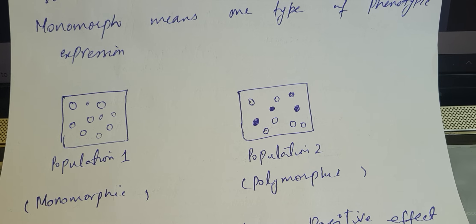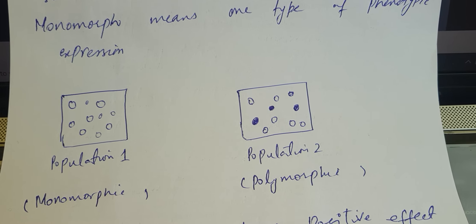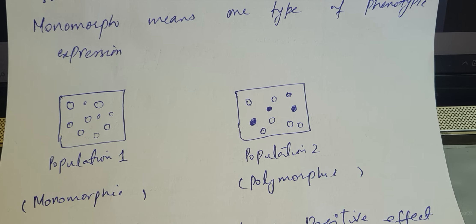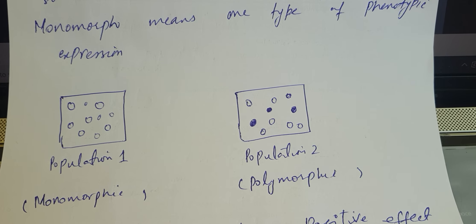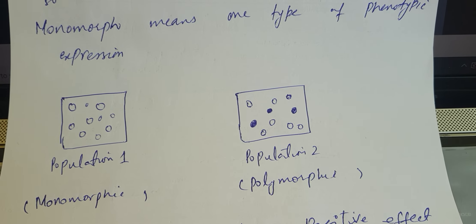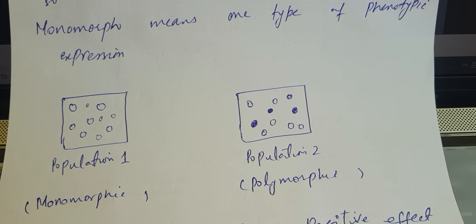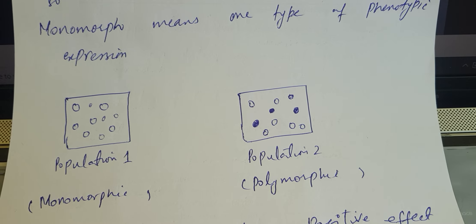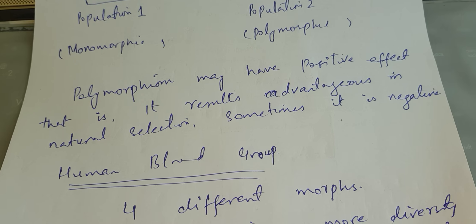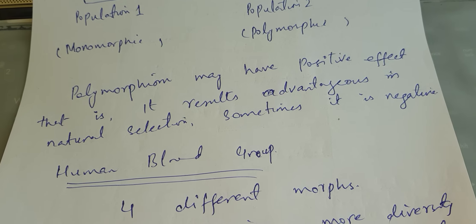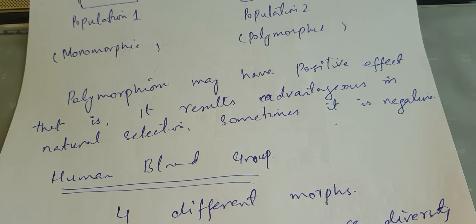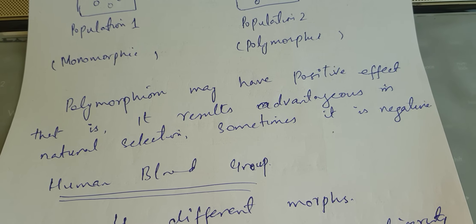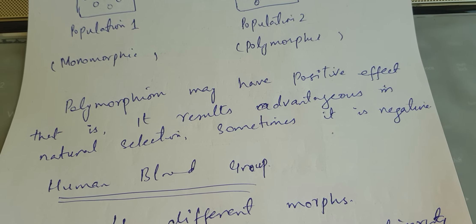So, in a monomorphic population, all individuals show the same phenotypic expression, whereas in a polymorphic population, individuals show different forms of phenotypic expression. Polymorphism can have a positive or negative effect in a population.